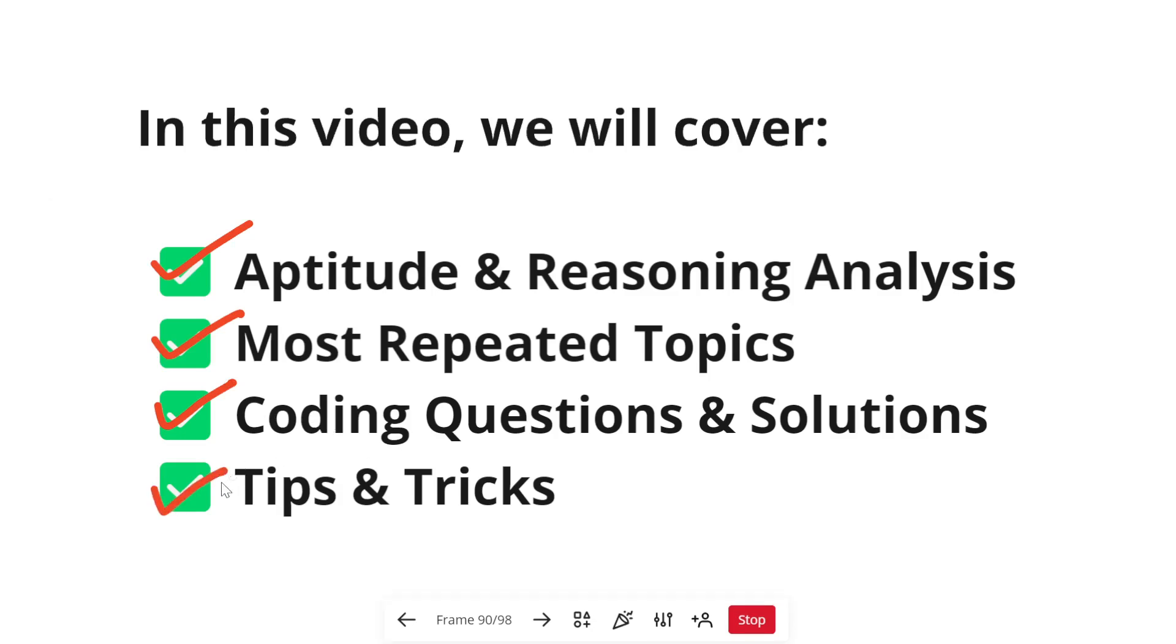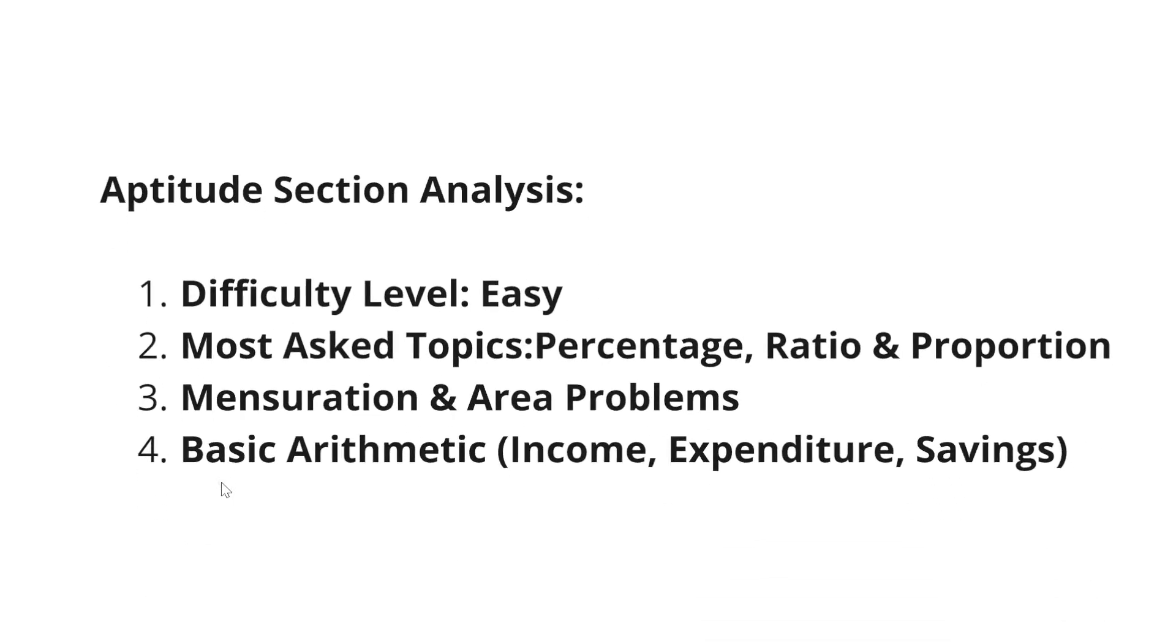Let's move forward with our first section which is aptitude section analysis. The difficulty level of this section was easy. Most asked topics in this section were percentages, ratio and proportion. All of you who have prepared from my ratio and proportion videos in my TCS NQT playlist, you might have found it very easy because you have already practiced the formulas. In ratio and proportion, the questions are very easy, it is not that tough.